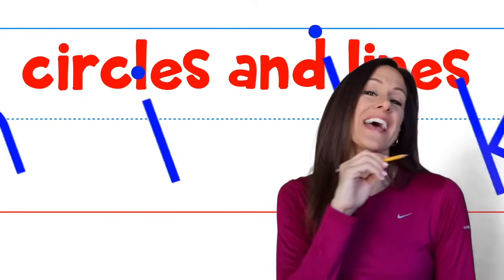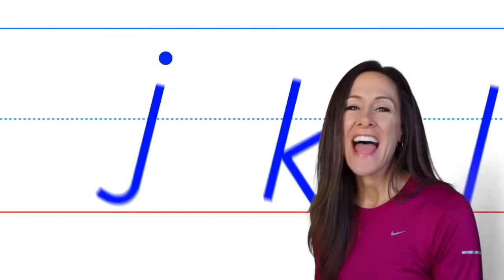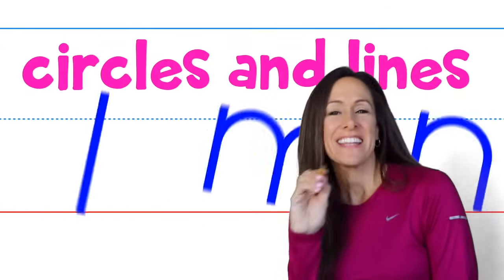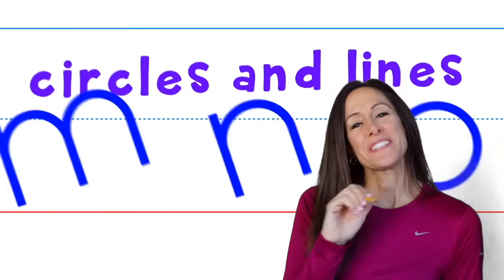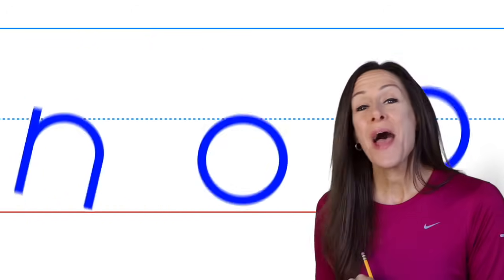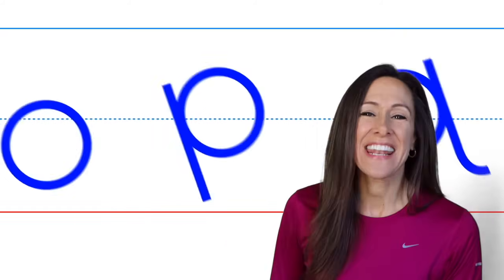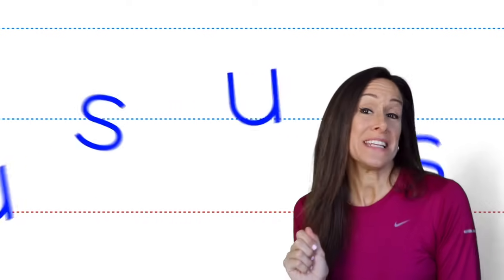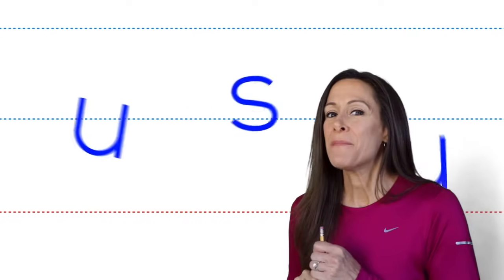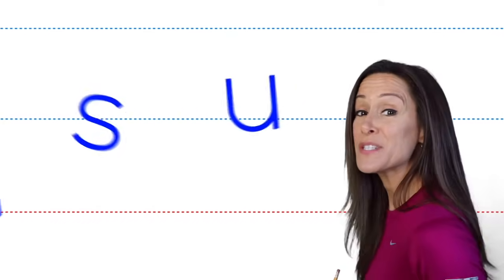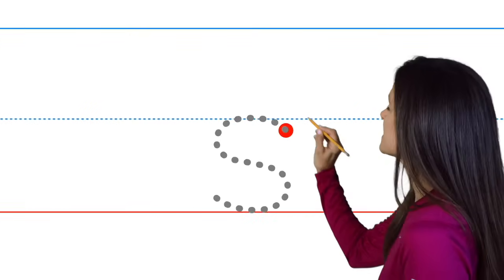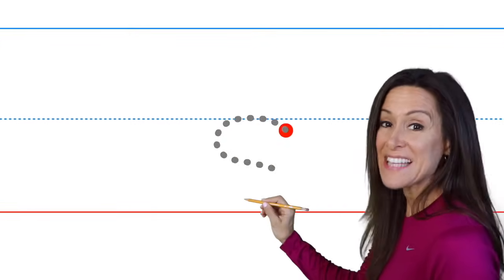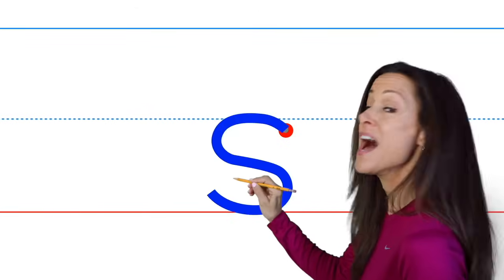Circles and lines, circles and lines. These are the letters with circles and lines. Circles and lines, circles and lines. Let's write them out one at a time. There are two letters, very special ones. They seem very different than the rest of them. Let's sing them loud, let's sing them strong — these special letters in our alphabet song. S is swerved on top and at the bottom.